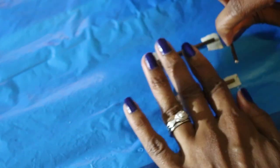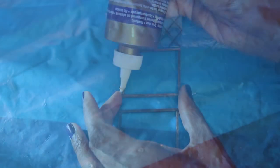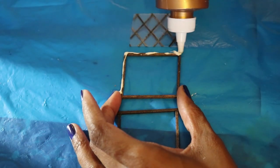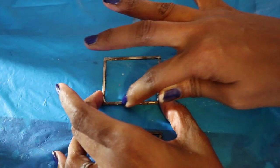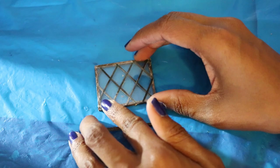I repeat these steps to make a second window frame. When they're completely dry, I sandwich the plastic in between the two frames. I did need to trim the plastic before gluing.